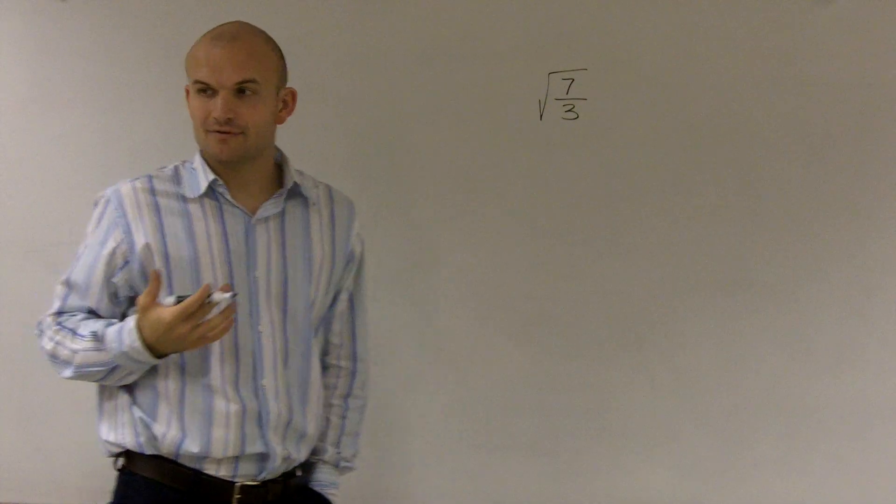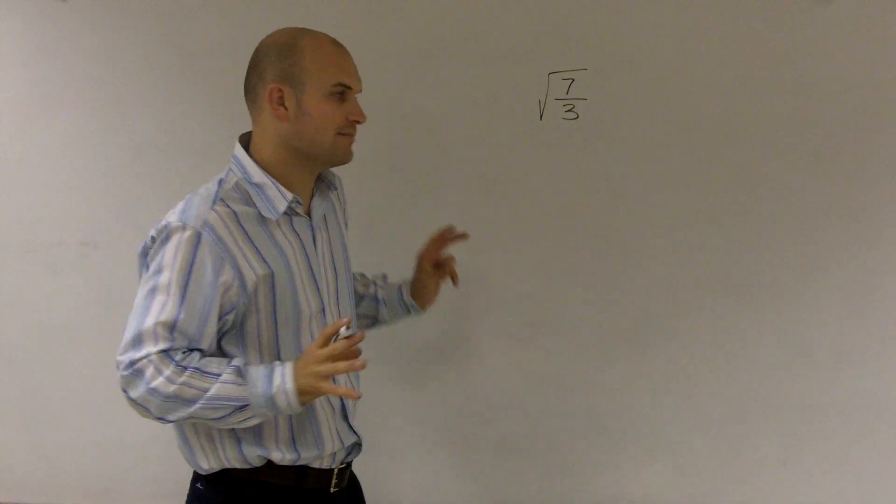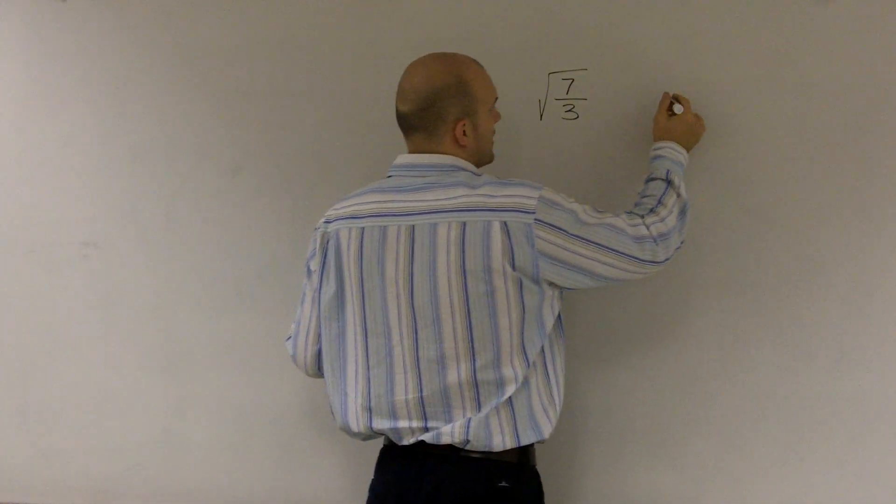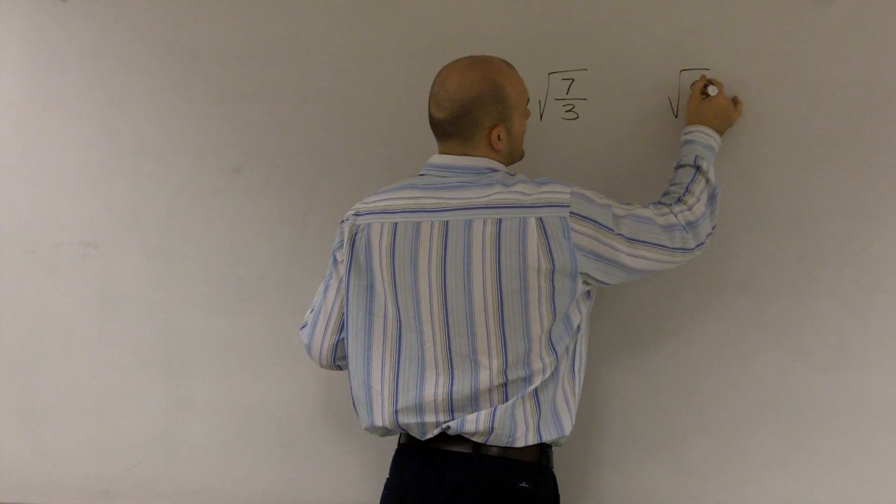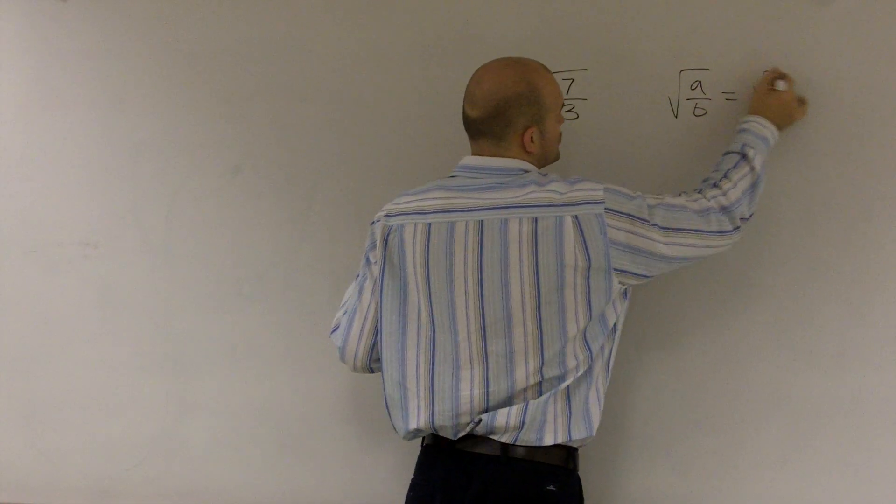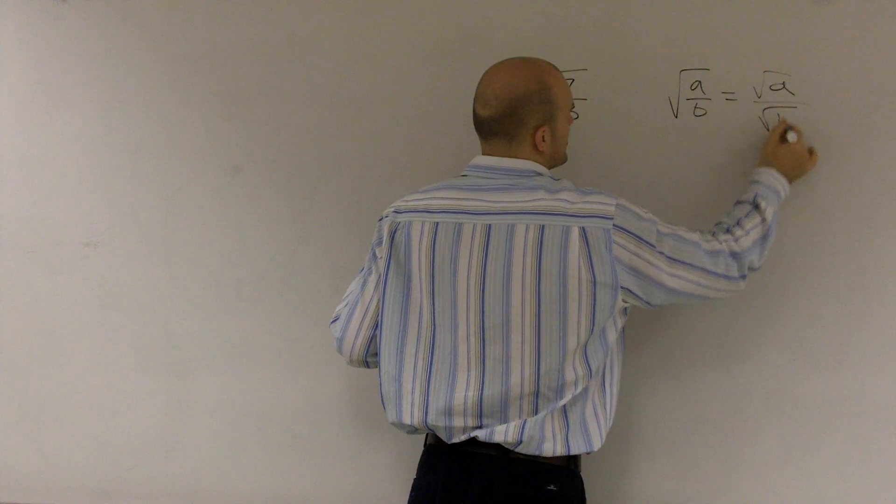OK, when given the square root of 7 over the square root of 3, there's a main important property that we need to understand. And that is the square root of a over b is equal to the square root of a divided by the square root of b.